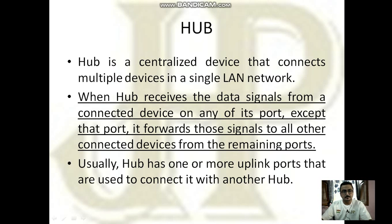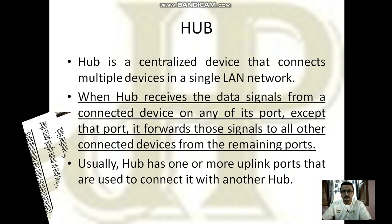The first one is hub. A hub is a centralized device that connects multiple devices in a single LAN network. You can think about your lab — in a lab, various computers can be connected with a hub. When a hub receives data signals from a connected device on any of its ports, it forwards those signals to all other connected devices through the remaining ports. The destination device accepts the data signals, and all other connected devices ignore them.